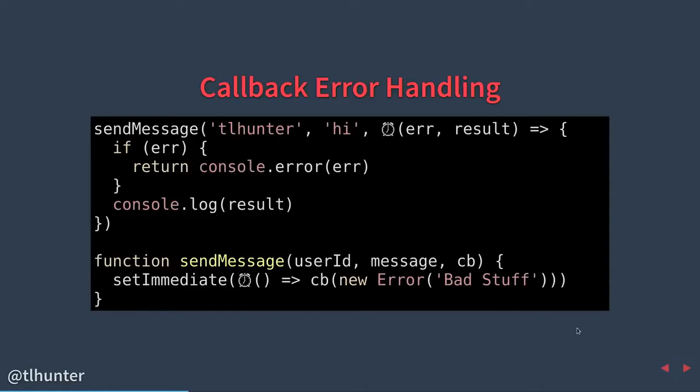You want to add a setTimeout or setImmediate to ensure that callbacks are executed in a different stack. This is lovingly referred to as 'introducing Zalgo' into your API by the Node community. Has anybody ever been bitten by Zalgo?